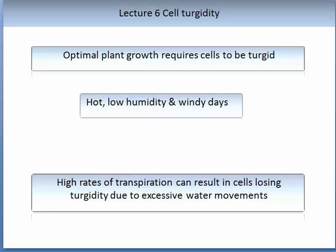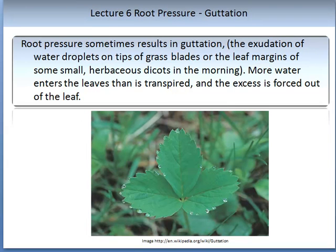On a hot, low humidity, high wind day, plants are likely to be transpiring at a high rate. This can result in cells losing turgidity due to excessive amounts of water moving through the plant, which can only occur if there is enough available water around the root system. I'd like to introduce the phenomenon known as guttation. It occurs when more water is forced out of the leaf than is being transpired, with droplets on the leaf forced out through root pressure changes. This is often seen in herbaceous dicots first thing in the morning.